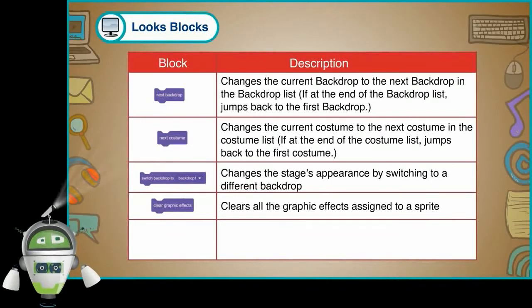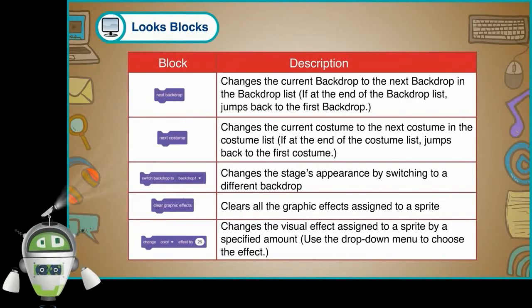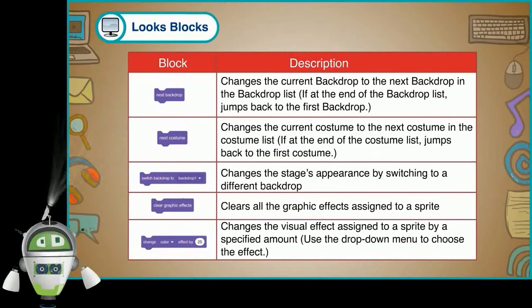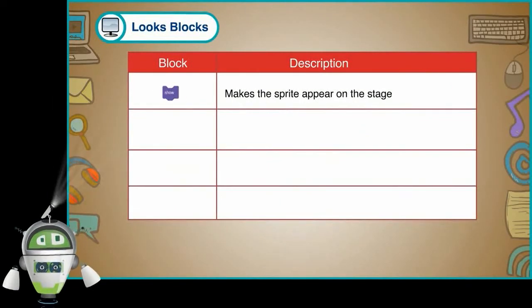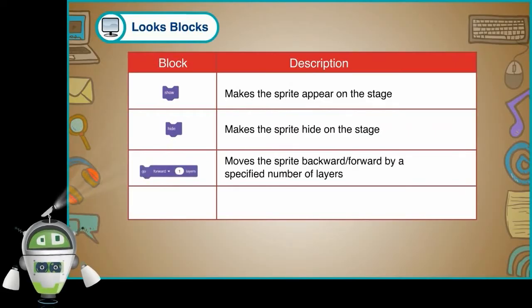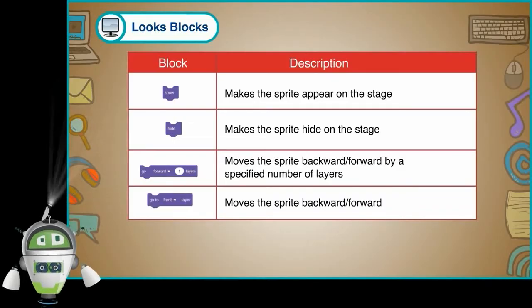Clears all the graphic effects assigned to a sprite. Changes the visual effect assigned to a sprite by a specified amount — use the drop-down menu to choose the effect. Makes a sprite appear on the stage. Makes a sprite hide on the stage. Moves the sprite backward or forward by a specified number of layers.